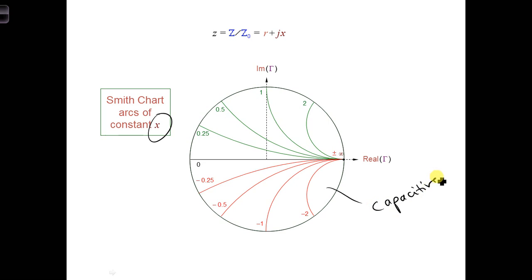And the green are inductive, so they're positive reactances. x can vary from negative infinity to positive infinity.